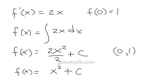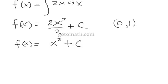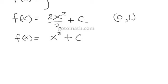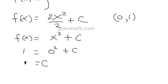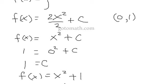We have a particular point at (0, 1), which is f of 0 is equal to 1. We plug in 0 and set it equal to 1. Therefore c is equal to 1. So a particular solution is f of x is equal to x squared plus 1.